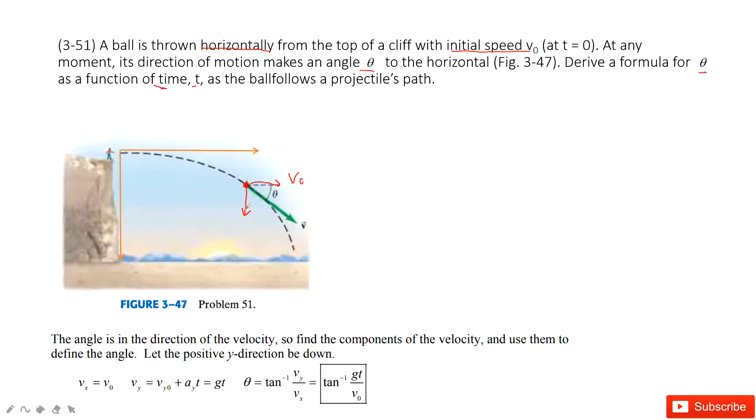So in this one, at y component, it is gt. So we can see this is gt, this is v0. So can we find the angle theta? Yes. The theta is arctangent vy divided by vx. So in this one, we find it arctangent gt divided by v0.